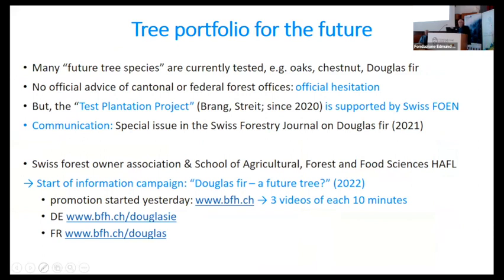For the future portfolio: many of these future tree species are currently being tested by local foresters at different places — spontaneously and not in an organized way, but every forester can do what they like. Tested species include oak, chestnut, and Douglas fir. There is no official advice from cantonal or federal offices — I would call this an official hesitation.